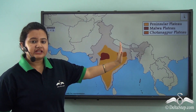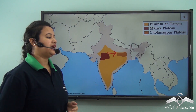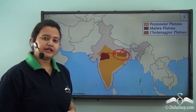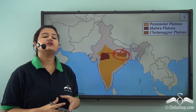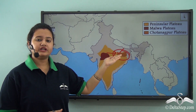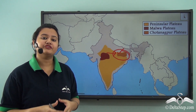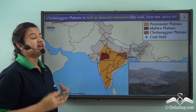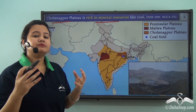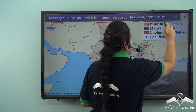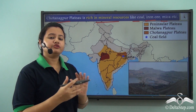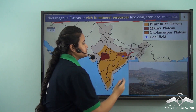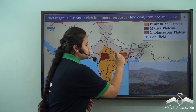To the extreme east of the Malwa Plateau lies another highland: the Chhota Nagpur Plateau, also a part of the Peninsular Plateau. Located in the eastern zone of central India, this region is rich in mineral resources and is a storehouse of vital minerals like coal, iron ore, and mica. In fact, the largest coal field in India — situated in the Jharia district of Jharkhand — is also a part of the Chhota Nagpur Plateau.